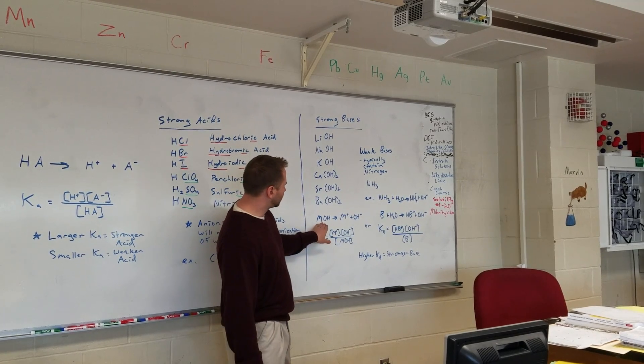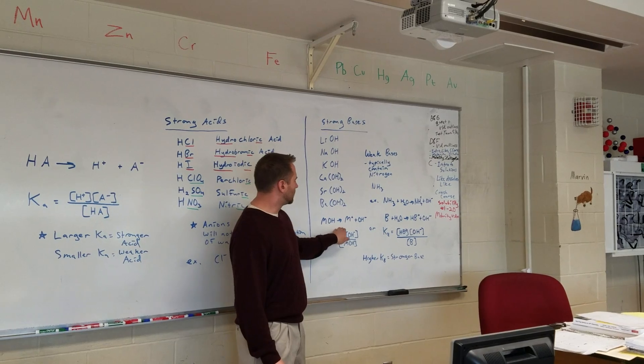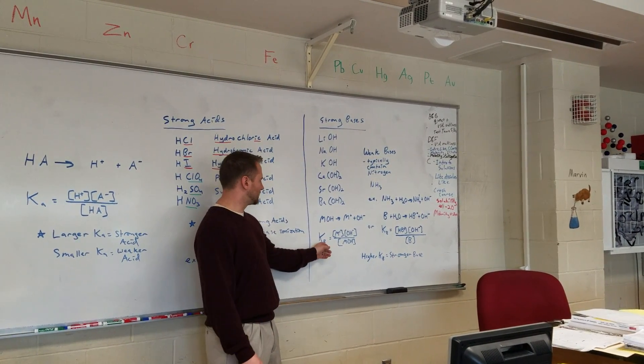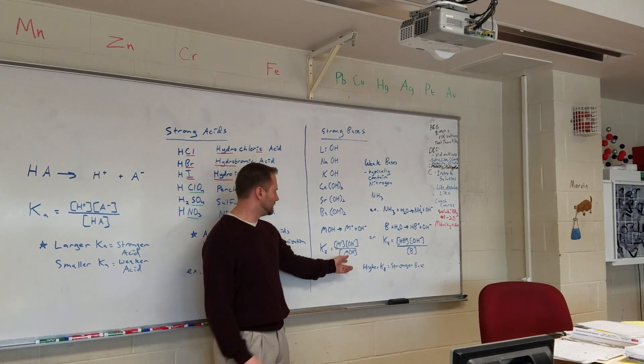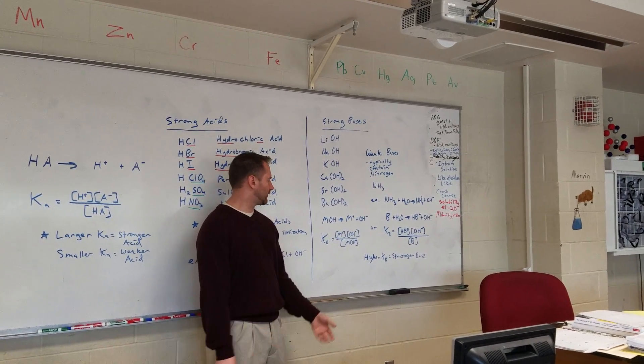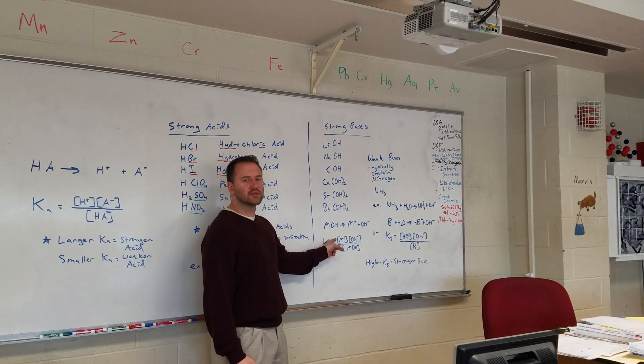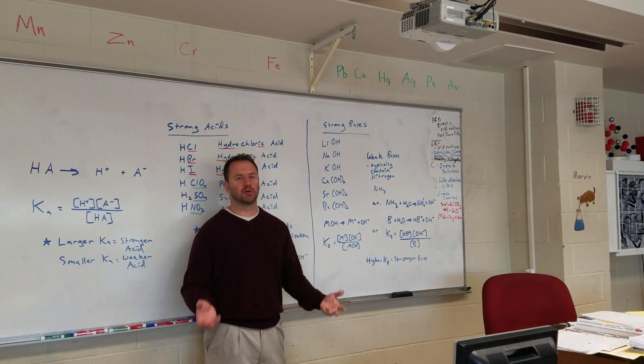So strong bases you could represent as some metallic ion and hydroxide, and it will split apart. So the base dissociation constant for this is going to be the ratio of the dissociated particles to the stuff that's still stuck together. And if you have a strong base, this is going to be a high value because the vast majority of the time it's going to break apart into ions. So you would have a number much, much greater than one.